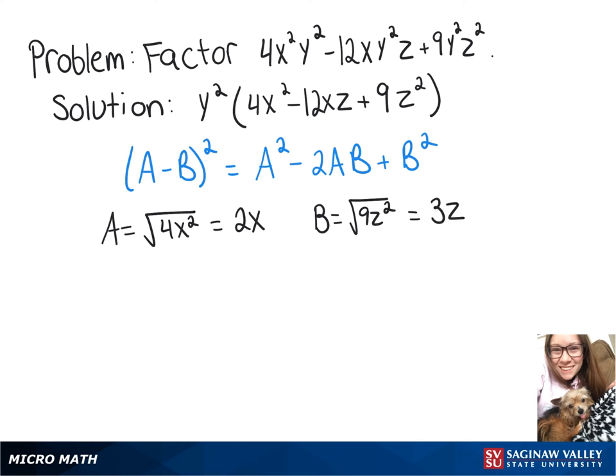Now we have to check that 2ab is the middle term that we have there, so 2 times 2x times 3z, and that does end up giving us 12xz.